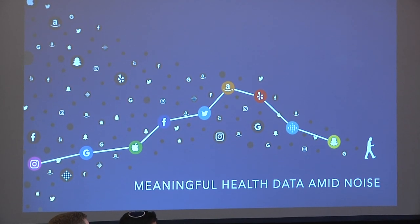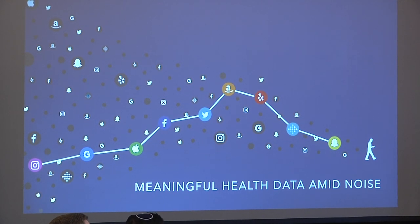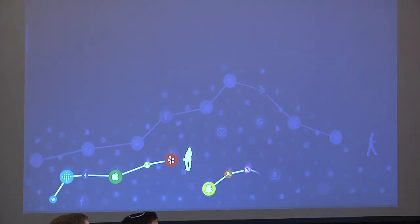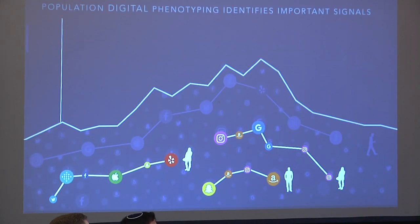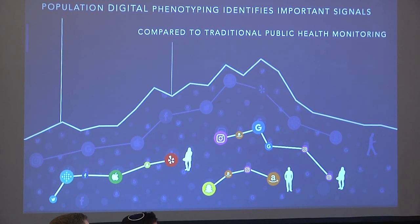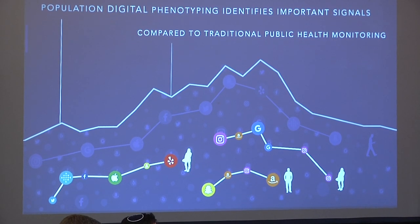Some percentage of those — what we call digital breadcrumbs — relate to health behaviors and health outcomes. As we start to organize that information and look at it across multiple different individuals over time, our view is that you can start to get some real insights about population health. There have been many examples that show the insights from this data can tell us early information about epidemics, whether it's infectious disease, chronic disease, or health behaviors.